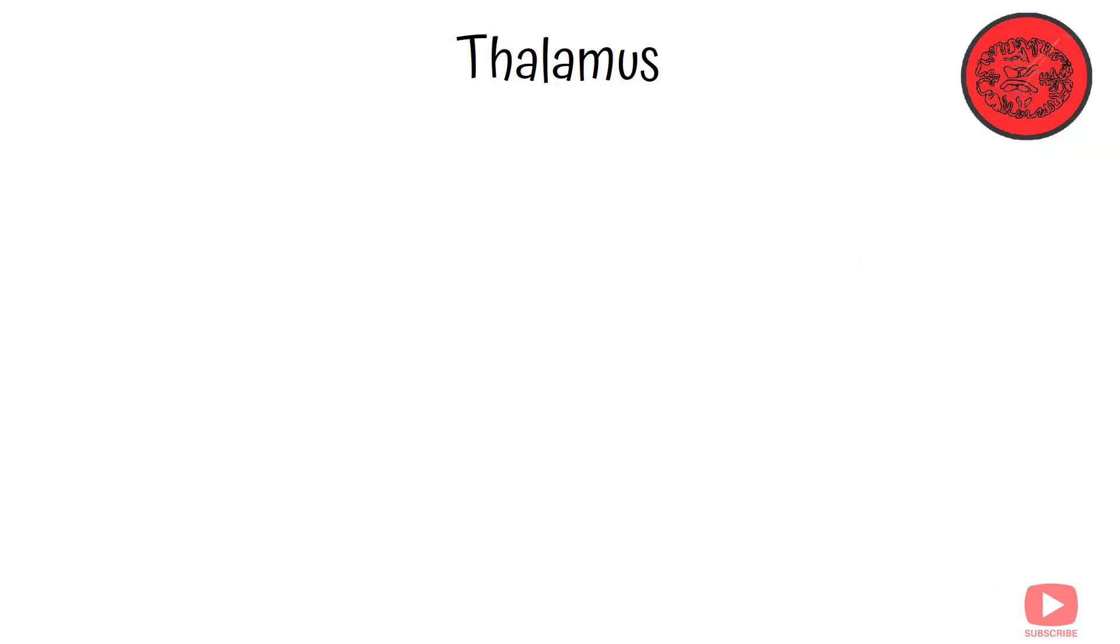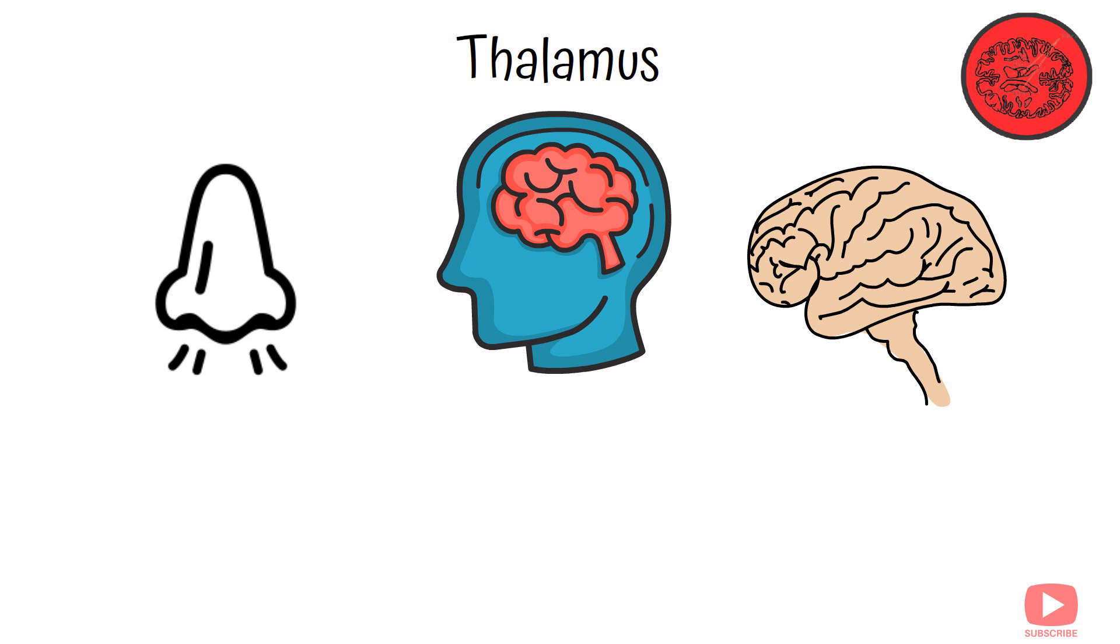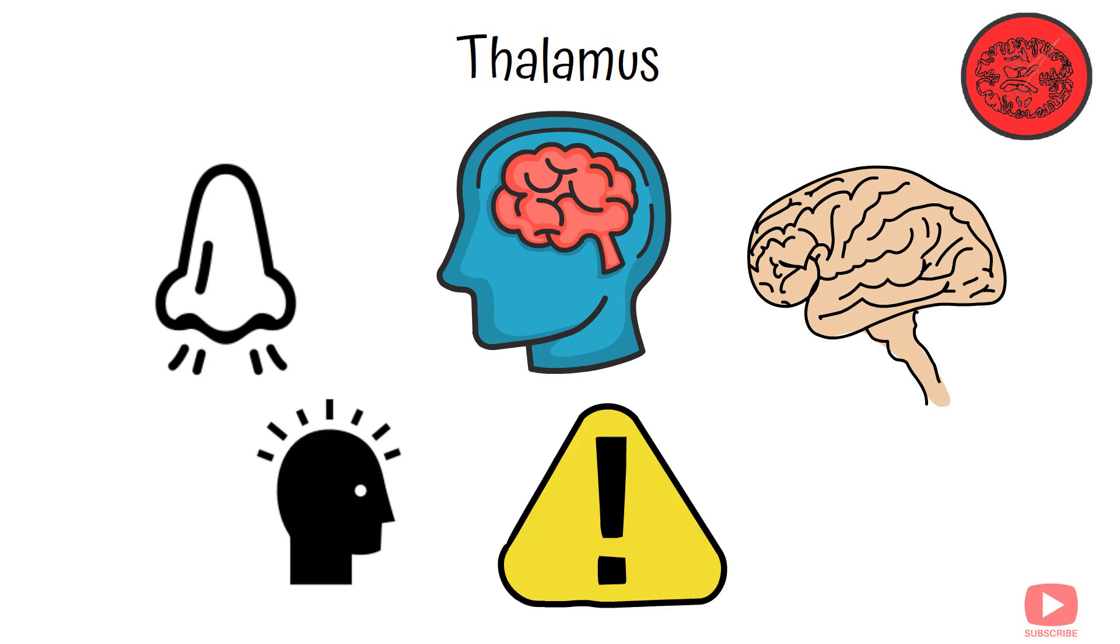Thalamus. The thalamus is like the brain's relay station. It takes in sensory information, except for smell, and sends it to the appropriate areas of the brain for processing. It's involved in regulating consciousness, alertness, and sleep.